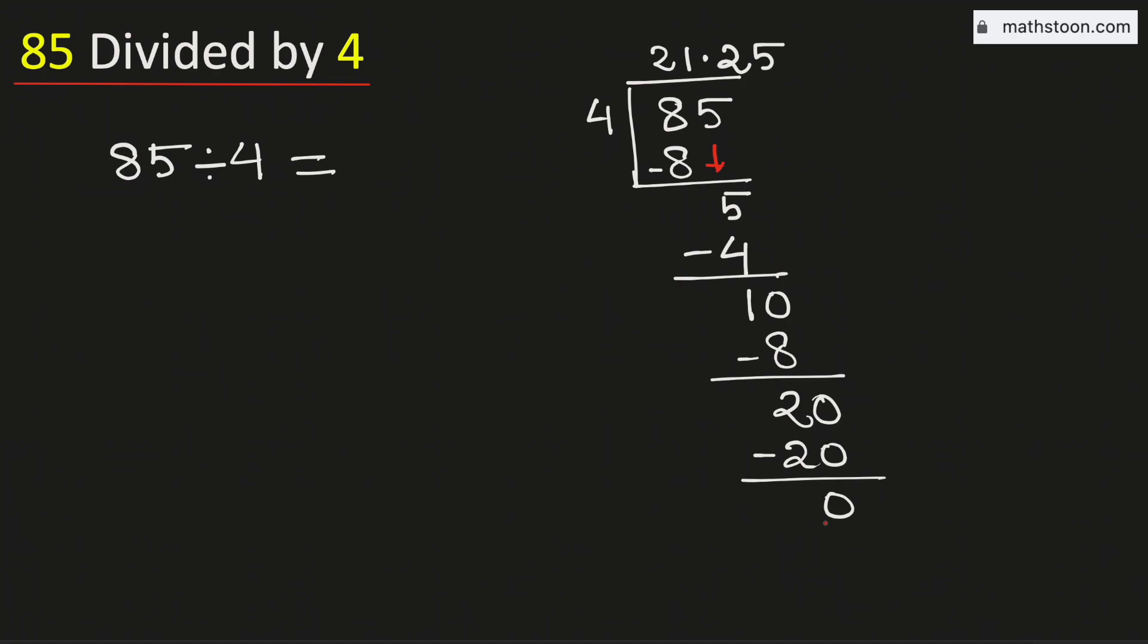As we have got the number 0, we will stop. Therefore, 85 divided by 4 is equal to 21.25. And this is our final answer.